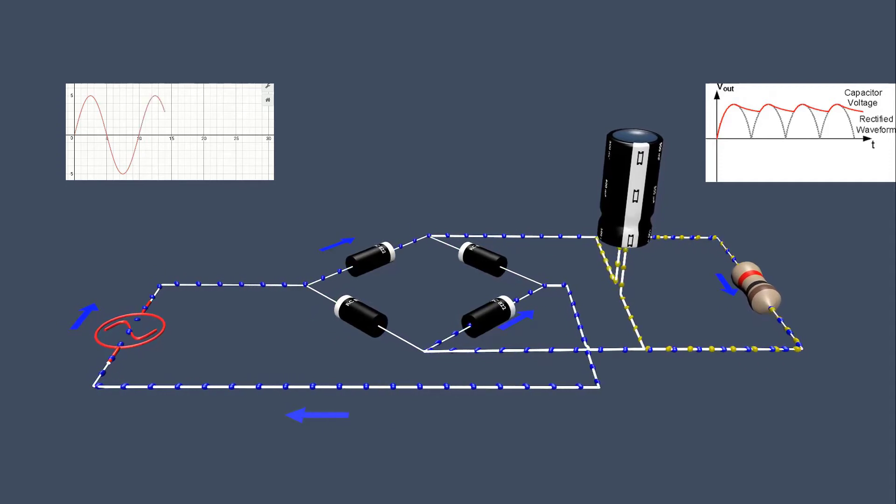Capacitor stores the energy from the input and releases energy to output. By placing the capacitor, we can smooth the output voltage.